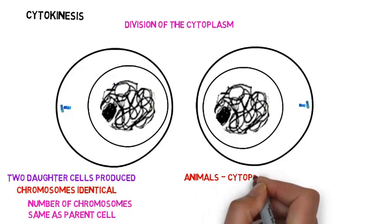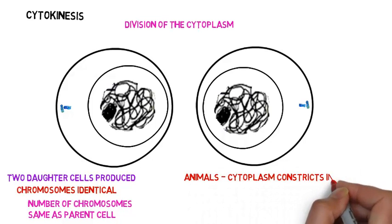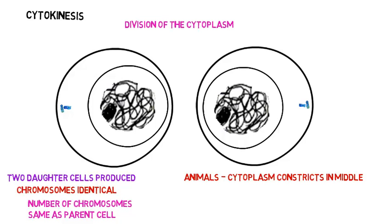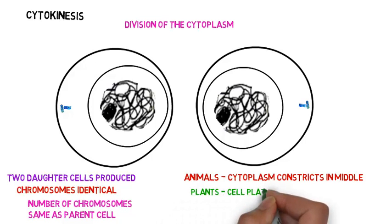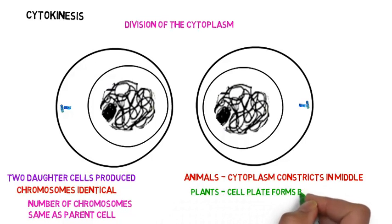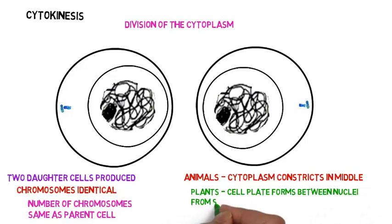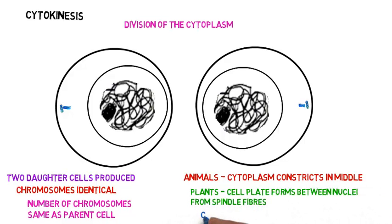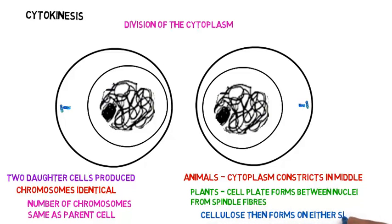In an animal cell, cytokinesis simply occurs by constriction or pinching off — it constricts right in the middle and separates that way. In plants, a cell plate forms between the two cells: the spindle fibres form a cell plate, and then cellulose is formed around that cell plate. So that is the process of mitosis and cytokinesis.